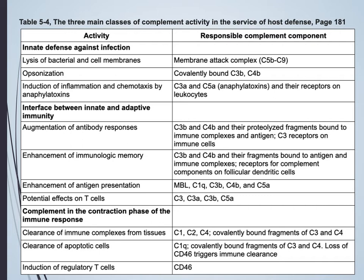Complement also plays a role in the contraction phase of the immune response — clearing damaged tissues. Complement pathways facilitate clearance of immune complexes from tissue, clearance of apoptotic cells, and induction of regulatory cells. Complement can signal phagocytes to engulf apoptotic debris, playing an important role in tissue homeostasis.